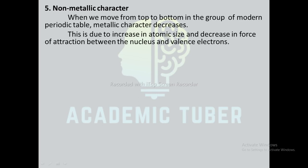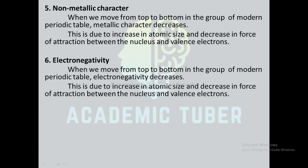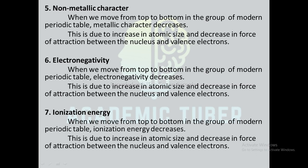Non-metallic character and electronegativity: when we move from top to bottom in a group, both non-metallic character and electronegativity decrease. Next, ionization energy: when we move from top to bottom in a group of the modern periodic table, ionization energy decreases. This is due to increase in atomic size and decrease in force of attraction between the nucleus and valence electron.